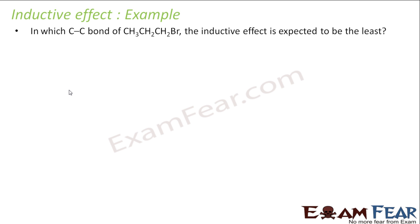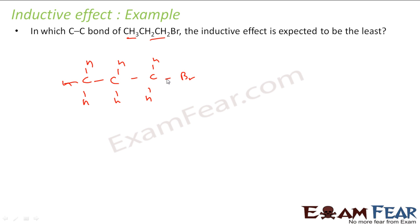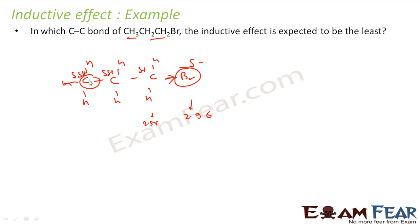In which C-C bond is the inductive effect expected to be least? I have the structure CH3-CH2-CH2-Br. Bromine is more electronegative than carbon — bromine is 2.96 and carbon is 2.55 — so bromine attracts electrons toward itself, developing a slightly negative charge. This inductive effect decreases as we move away from bromine along the chain, so the carbon farthest from bromine has the least inductive effect.